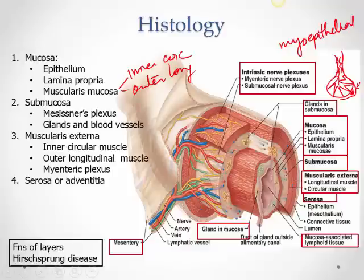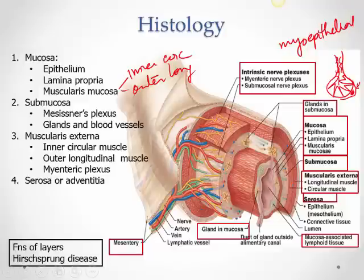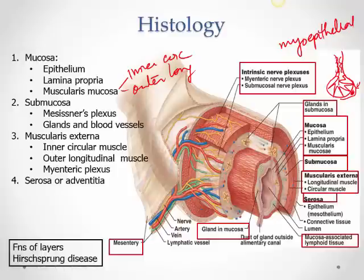The second layer is the submucosa, which contains the Meissner's nerve plexus, mucous glands in many regions, and is rich in blood vessels and nerves. Its connective tissue provides support, and large blood vessels here supply the muscle and epithelium. The third layer, muscularis externa — inner circular and outer longitudinal — is responsible for bulk peristaltic movements, with the myenteric plexus lying between the muscle layers.